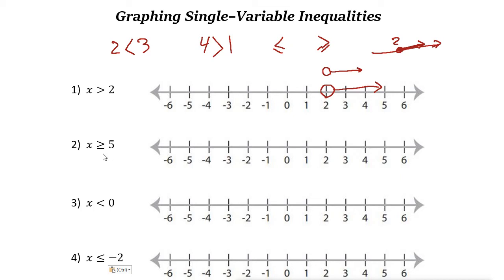Next example: x is greater than or equal to 5. First we find 5 on the number line. Since x could be 5 — because 5 is equal to 5 — we use a filled circle at 5. Because it says greater than or equal to, we move to the right. So the graph shows a filled circle at 5 with an arrow going right, meaning anything 5 or greater.